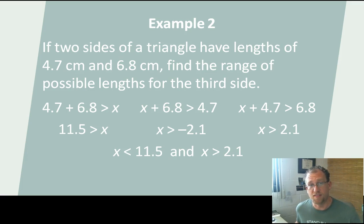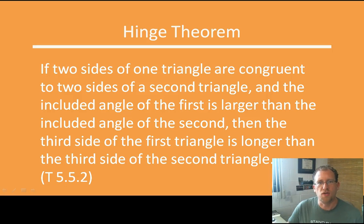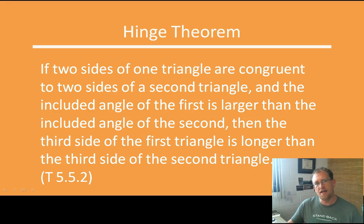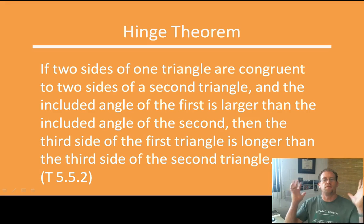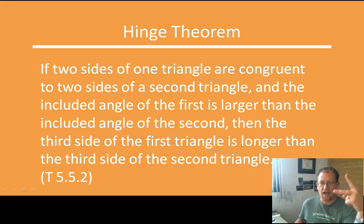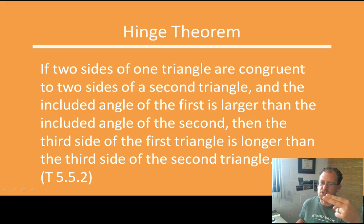One other unique thing about triangles is that if two sides of one triangle are congruent to two sides of a second triangle, and the included angle of the first is larger than the included angle of the second, then the third side of the first triangle is longer than the third side of the second triangle. There's a lot of words there, but a picture will help a lot. Basically, what we're saying is I have the same side length, and I use this like a hinge — that's why it's called the hinge theorem.